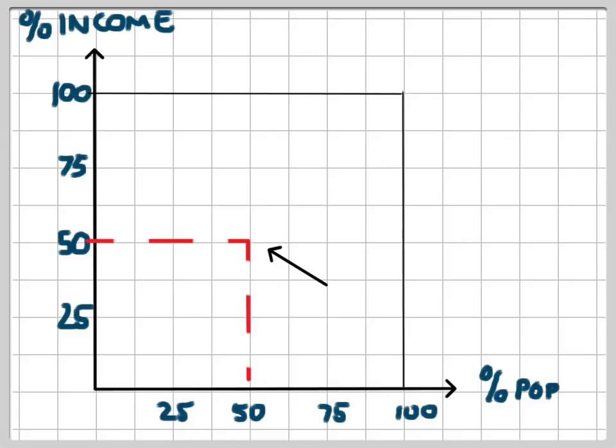And this would continue all the way through, so that 75% of the income was owned by 75% of the population. The end result would be a line of perfect equality, which looks like this. And again, sometimes it's called the egalitarian line.